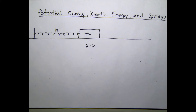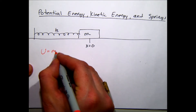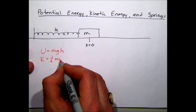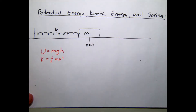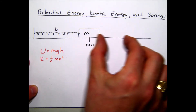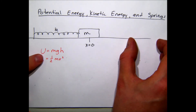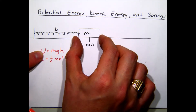Now we look at energy concepts borrowed from Physics 11: potential energy U = mgh and kinetic energy KE = ½mv². Potential energy is stored energy as an object is held up; when released it converts to kinetic energy. For a spring, pulling the mass to the right builds up potential energy stored in the spring, which converts to kinetic energy as it returns to x = 0.